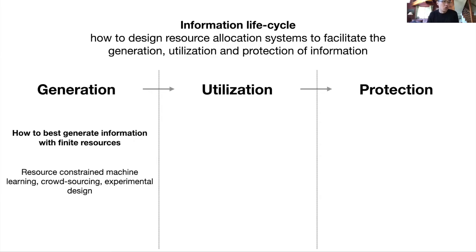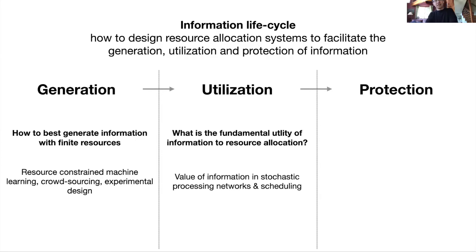Delving a bit more into the details now, of course there are many ways to articulate this question as far as what does it mean to be informationally centric. Here's one very concrete framework that I've been exploring a bit in my research. I want to understand how to design resource allocation algorithms and systems to facilitate the generation, utilization, and protection of information. Specifically, these three components are about the birth, sort of life, and the death of information. That's why we call it an information lifecycle. More specifically, under generation, one can think about how to best design and generate information given finite processing resources. The research vignette I will discuss later will have to do with resource-constrained machine learning, crowdsourcing, and experimental design.